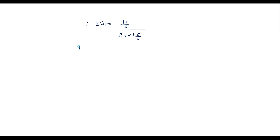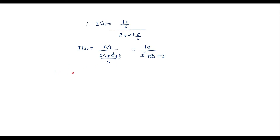Therefore, I(s) equals (10/s) divided by (2 + s + 2/s). Taking s as the LCM in the denominator gives (2s + s² + 2)/s. The s terms cancel, leaving I(s) = 10 divided by (s² + 2s + 2).